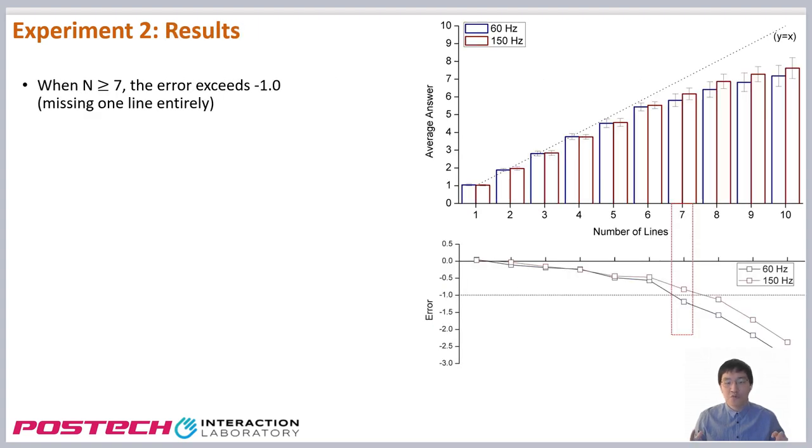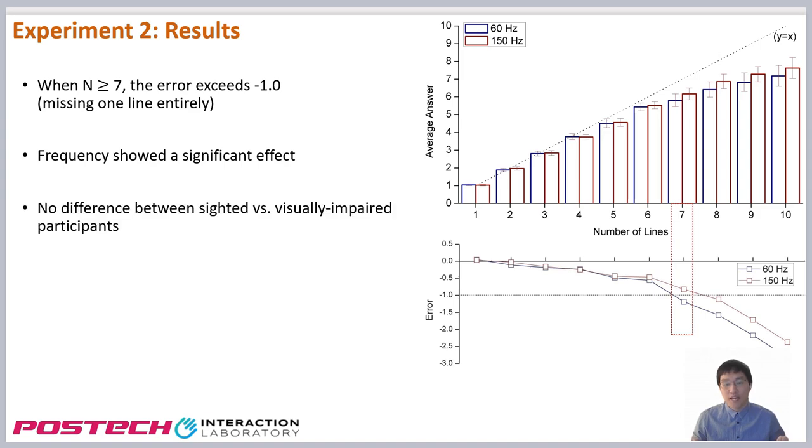Results showed that the participants tended to miss one or more lines if the number of lines exceeds 7. Frequency showed a significant effect, but the scanning direction didn't. There was no difference between sighted and visually impaired participants' results.